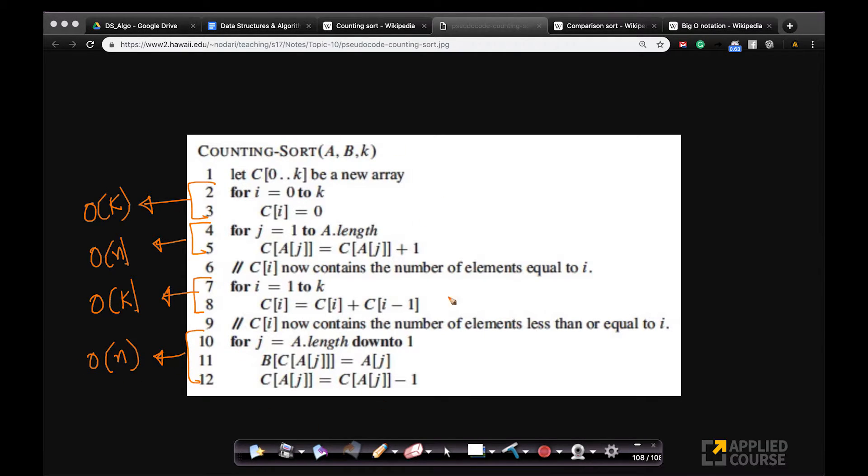You don't have any complex recursions or anything. So the total time it takes is basically order of n plus k. Where n is the size of your input array a and k is the number of unique values or the range of values because we said a contains values from 0 to k. So the total time complexity, both worst case, best case, everything, the time complexity is order of n plus k.